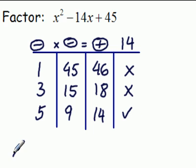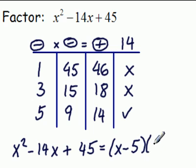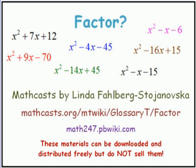So we have x squared minus 14x plus 45 equals x minus 5, x minus 9. Done. And that's our scheme for how to find the factors and their signs.